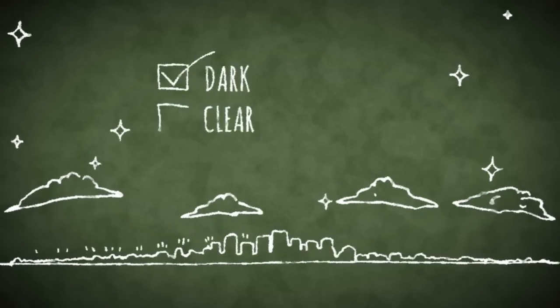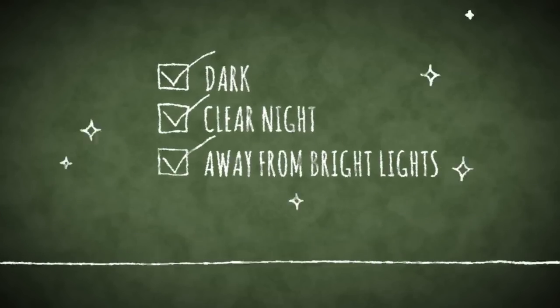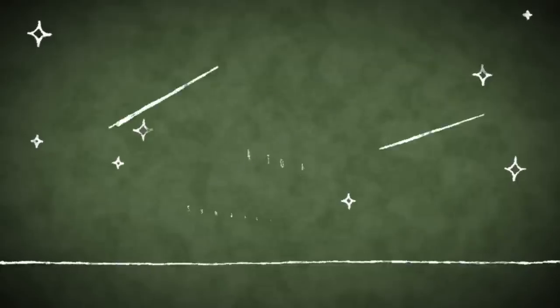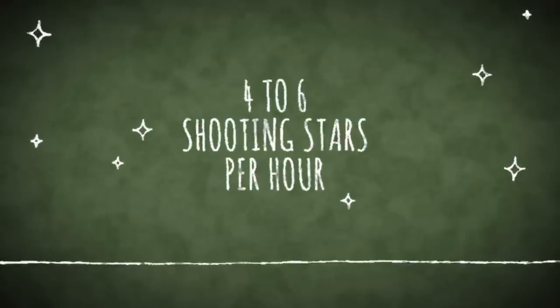On a typical dark clear night, away from bright lights, observers can usually glimpse four to six shooting stars per hour.